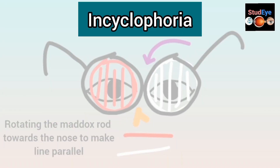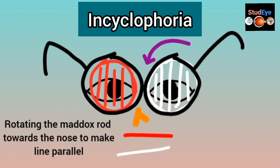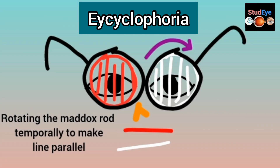If you rotate the Maddox rod toward the nose and the lines become parallel, this means the patient has incyclophoria — the 12 o'clock cornea is rotated inside or toward the nose, indicating some degree of incyclophoria. If instead you need to rotate the Maddox rod toward the temporal region, away from the nose, to make the lines parallel, this indicates the patient has some degree of excyclophoria.